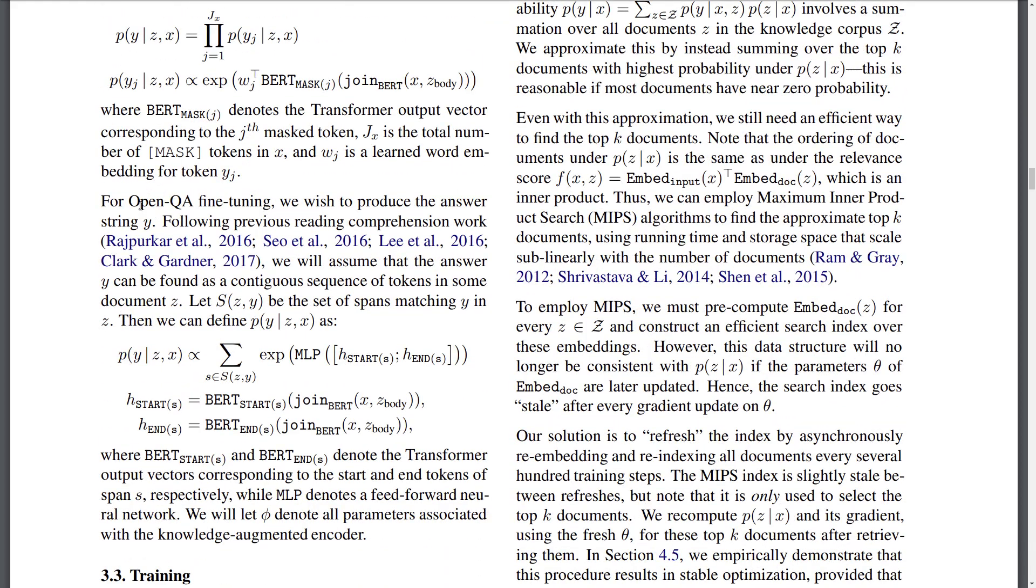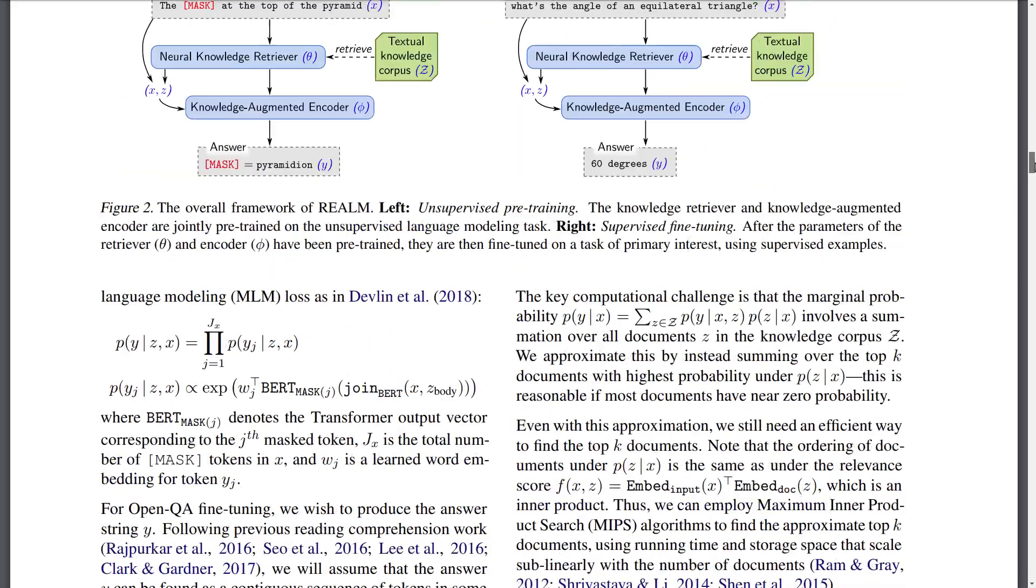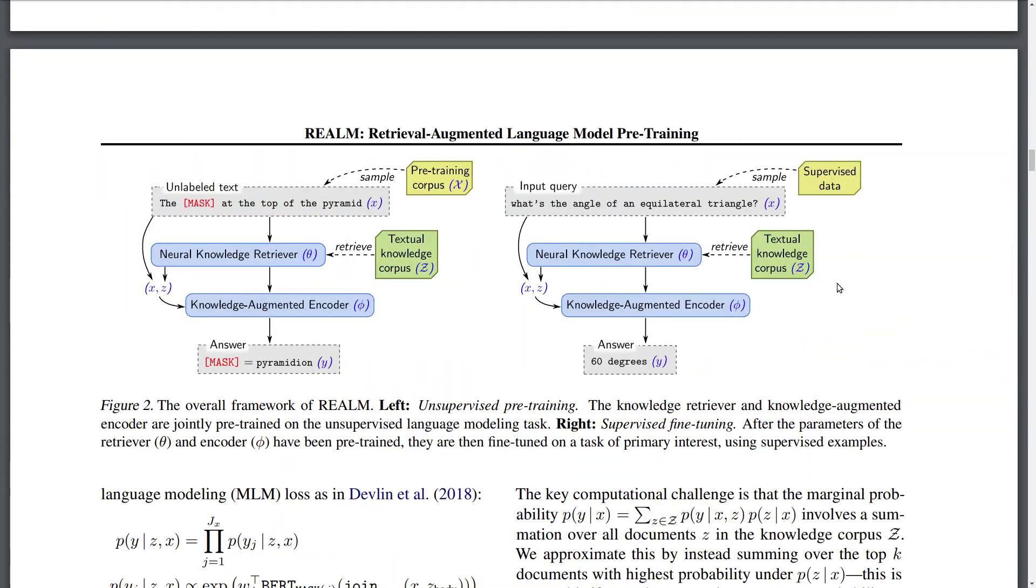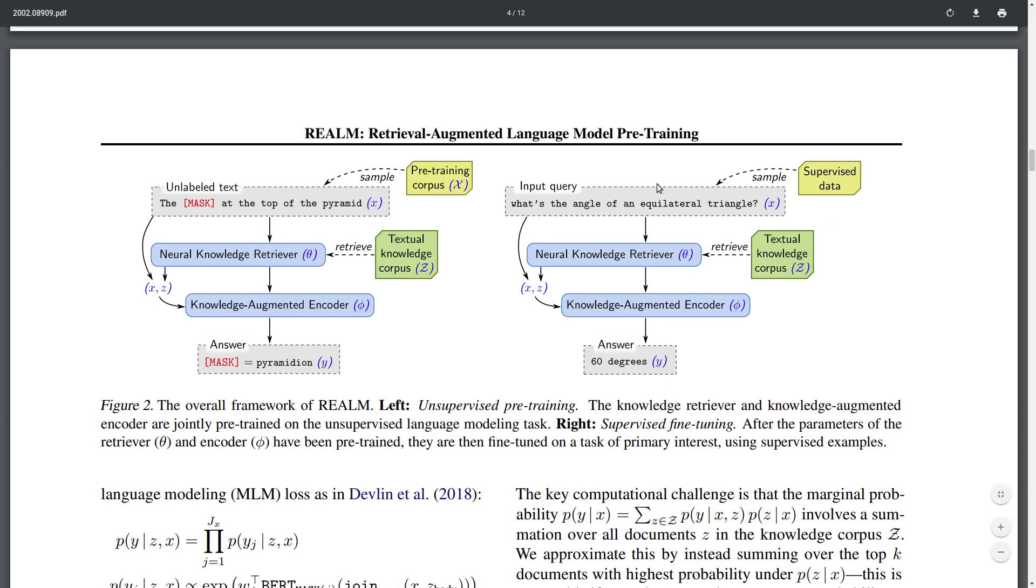But then you can also apply it to, let's say, question answering, which is illustrated here in this figure. You're going to have your x as the question, you're going to append your external knowledge to this question here on the right-hand side, let's say. And you're going to be then fine-tuning to get the correct answer. 'What is the angle of an equilateral triangle?' The answer is 60 degrees. So they first pre-train on this standard BERT-style objective, and then they fine-tune for question answering because they want to apply this REALM model to open domain question answering.